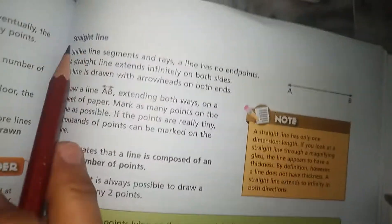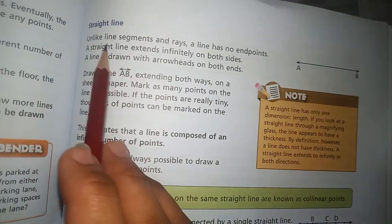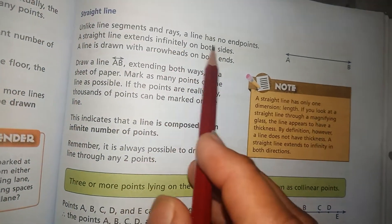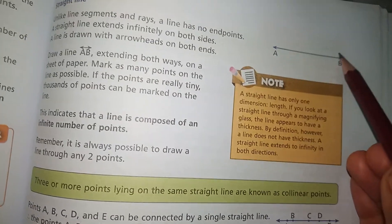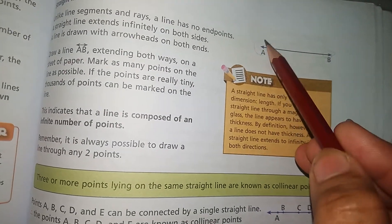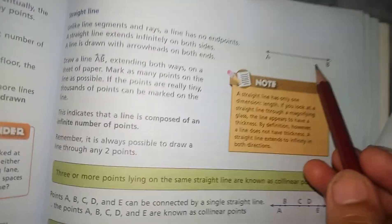A line segment has two bounded ends, a line has infinity on both sides, and a ray is part of a line with one endpoint with the other extending to infinity. Unlike a line segment and rays, a straight line has no endpoints. It is extending infinitely on both sides.